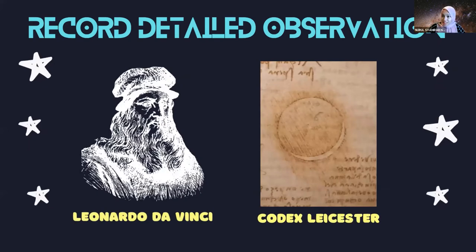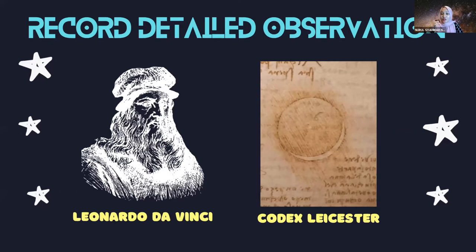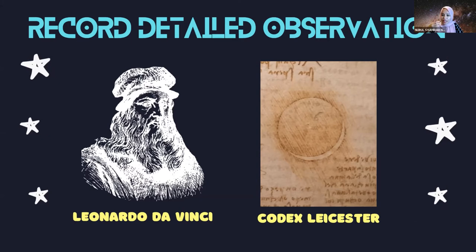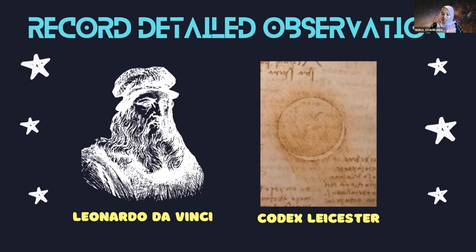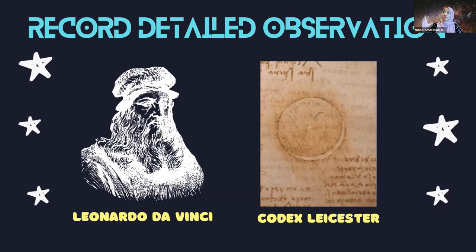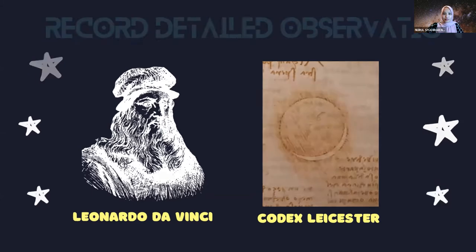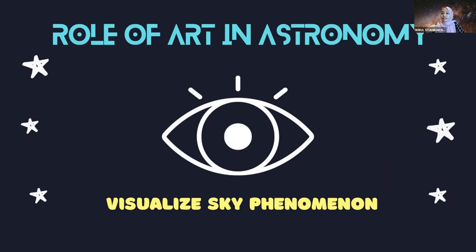We also have Leonardo da Vinci, who is a polymath — meaning he could do and knew a lot of things, including mathematics, science, and drawing. He produced a book called Codex Leicester and also drew his observations of the moon, just like Galileo did. But he didn't look at the moon through a telescope — he made a detailed observation using his naked eyes.